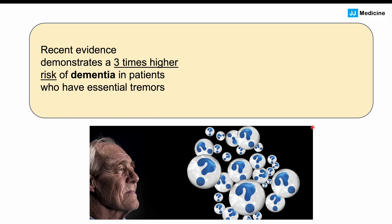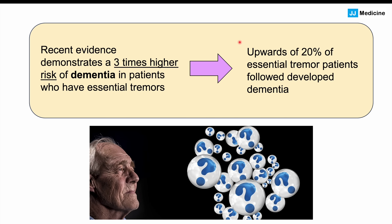New research shows a connection between essential tremor and an increased risk for dementia. Patients with a diagnosis of essential tremor appear to have a roughly three times higher risk of dementia than those without. A longitudinal study found that upwards of 20% of essential tremor patients followed in the study developed dementia, suggesting a strong relationship between essential tremor and later development of dementia.